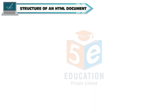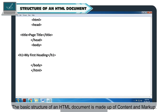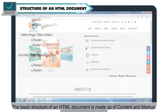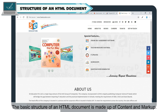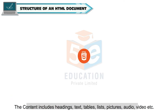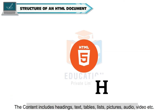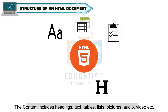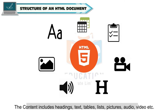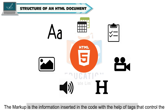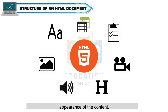Structure of an HTML Document: The basic structure of an HTML document is made up of content and markup. The content includes headings, text, tables, lists, pictures, audio, video, etc. The markup is the information inserted in the code with the help of tags that control the appearance of the content.